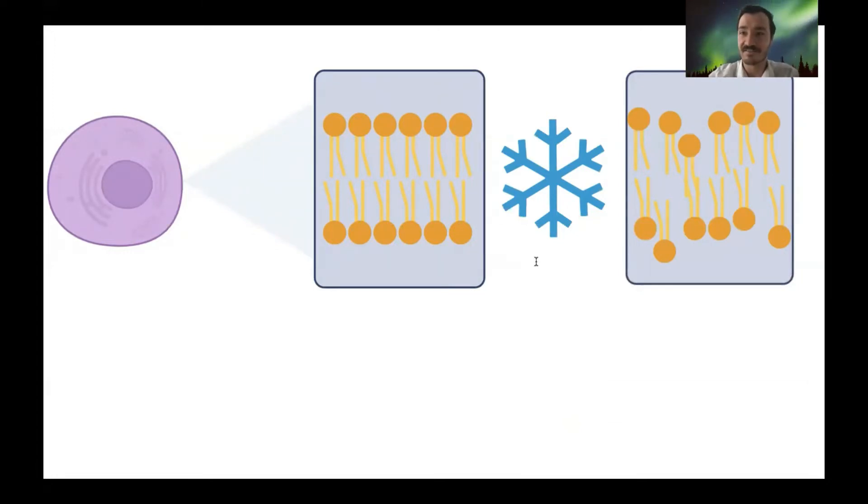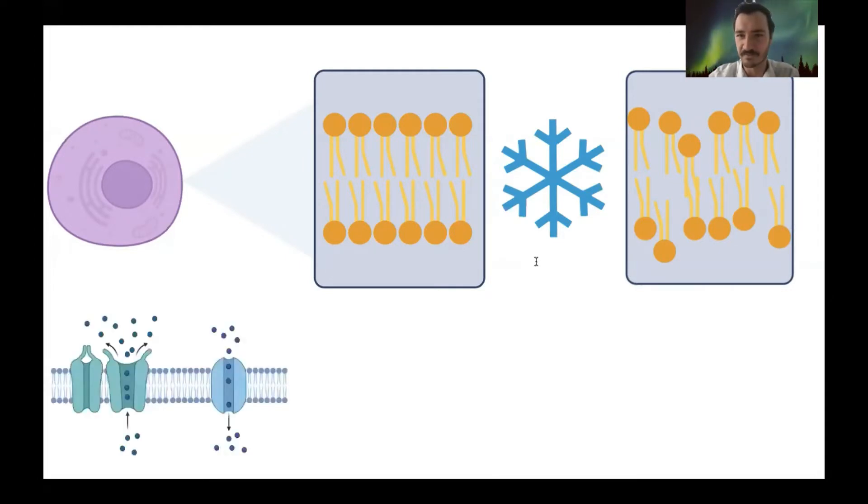This not only affects the integrity of the membrane itself, but also some of the channels and transporters within the membrane. Without a functioning cell membrane, the cell can once again die very quickly.